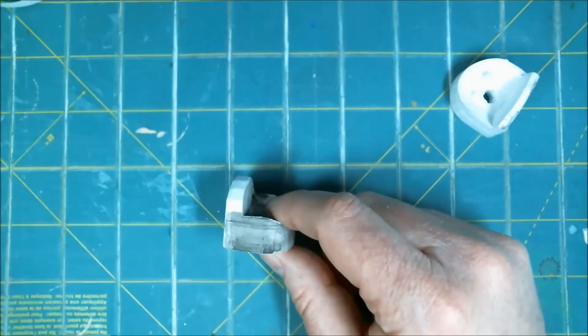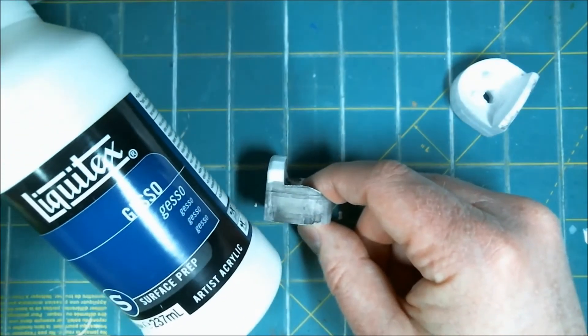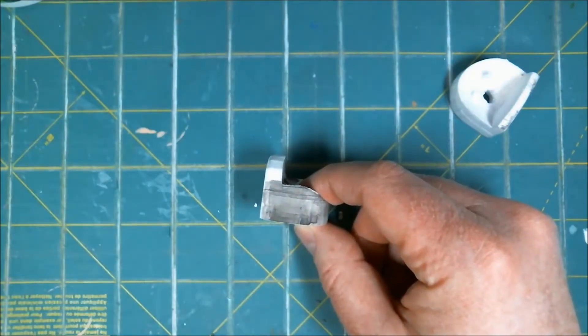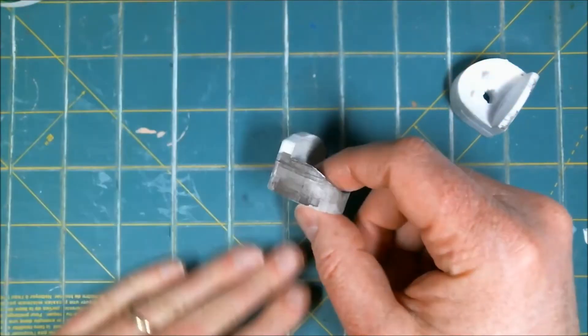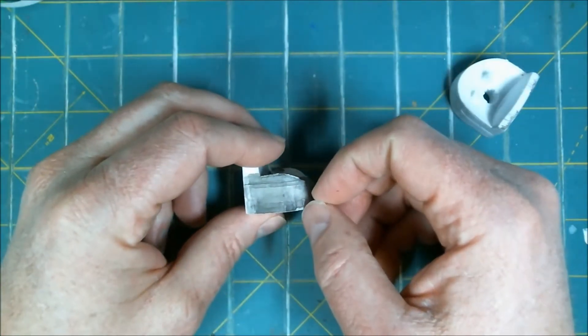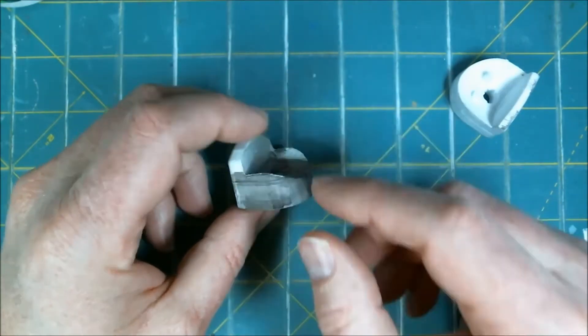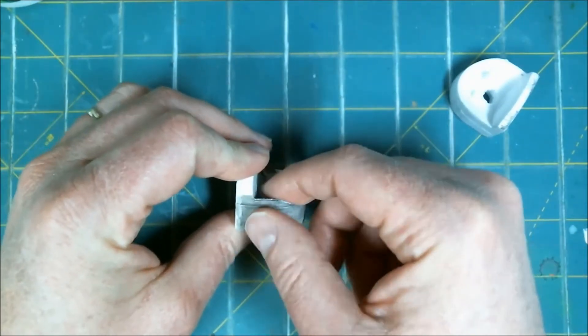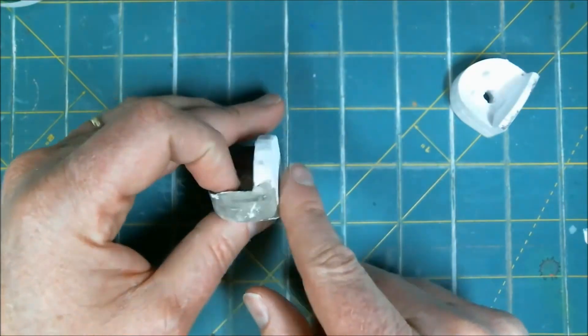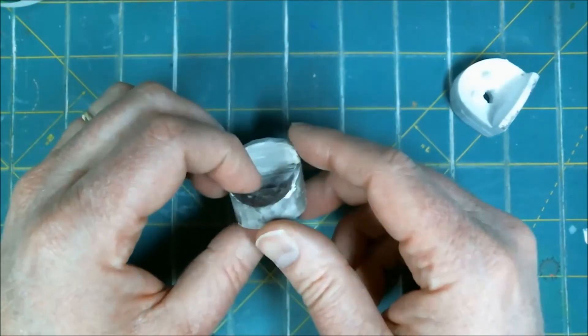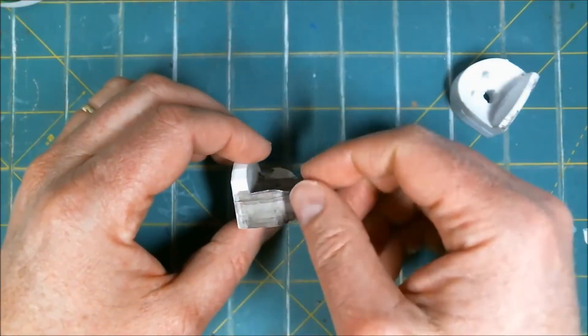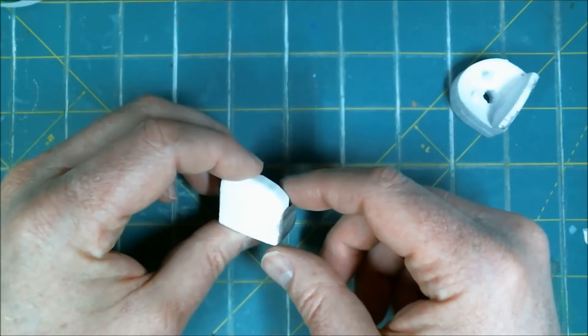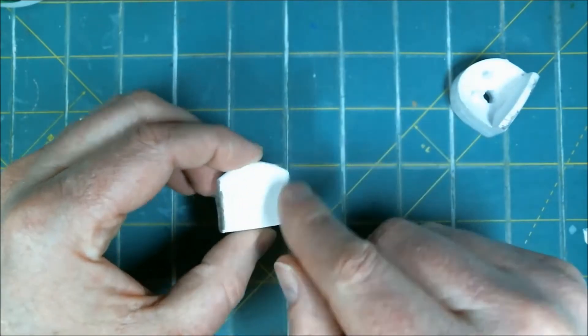And then on this side I tried some just Liquitex Gesso. I'm not an artist. We'll call it Gesso. Put that on there. And it really didn't cover up the lines like I'd hoped to. And this is just black liner applied on here. So the big question is, does it sand?